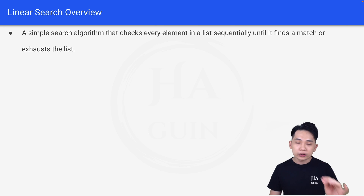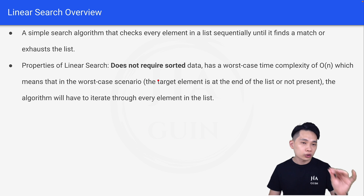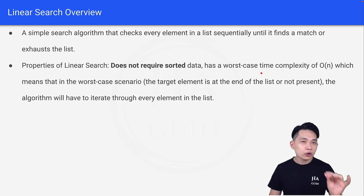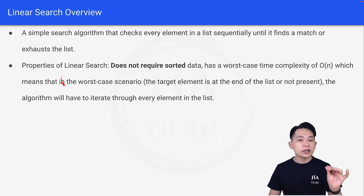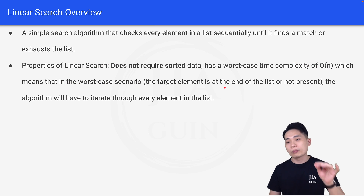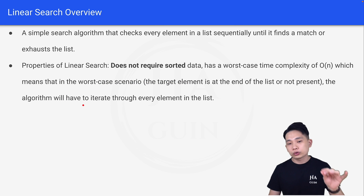What are the properties of linear search? First of all, linear search does not require sorted data — this is a very important point. It has a worst-case time complexity of O(N), which means that in the worst-case scenario, the target element is at the end of the list or not present, and the algorithm will have to iterate through every element in the list.